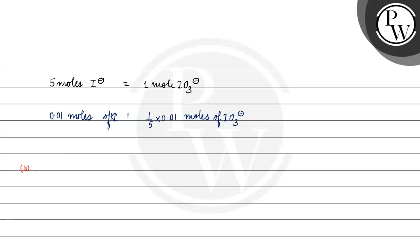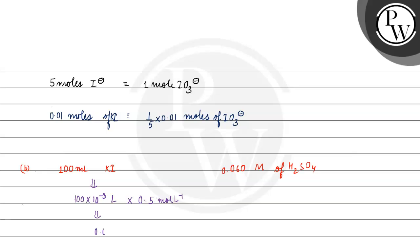Next, for Option B: we have 100 ml of KI solution and 0.060 molar H2SO4. The number of moles of KI = 100 × 10⁻³ × 0.5 = 0.05 moles.